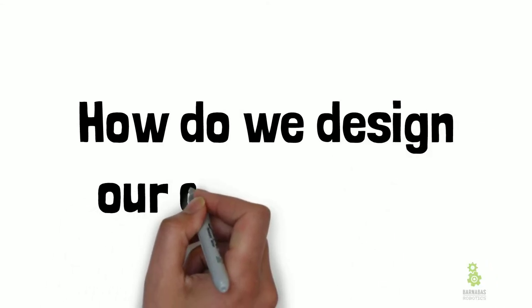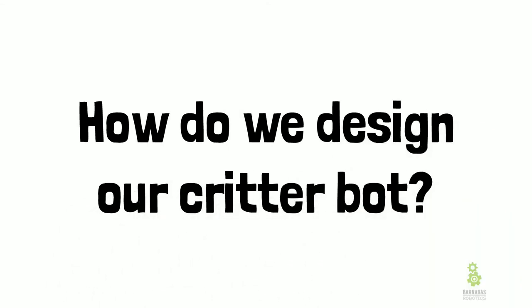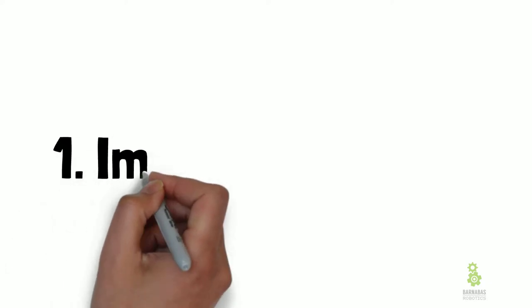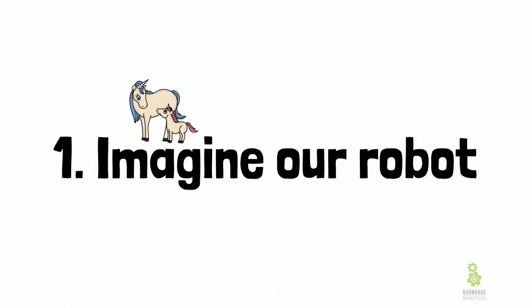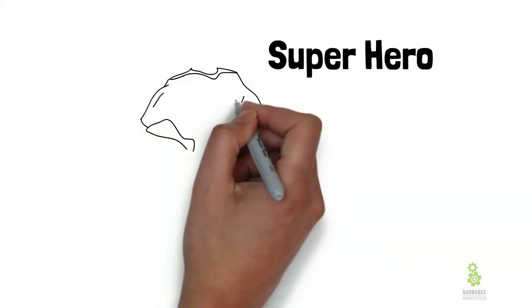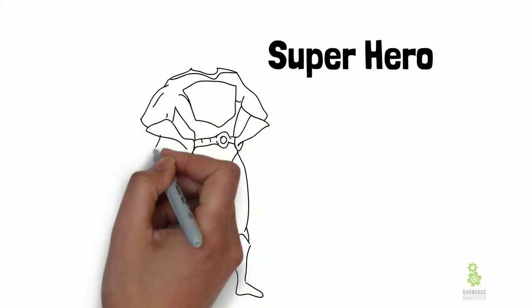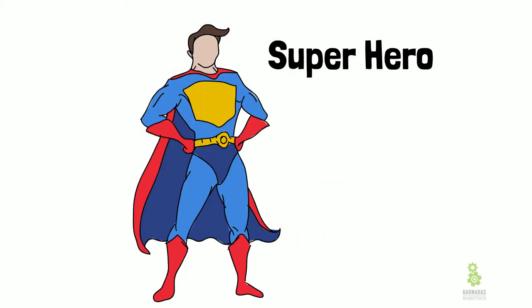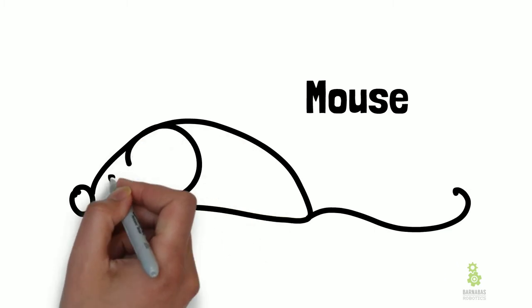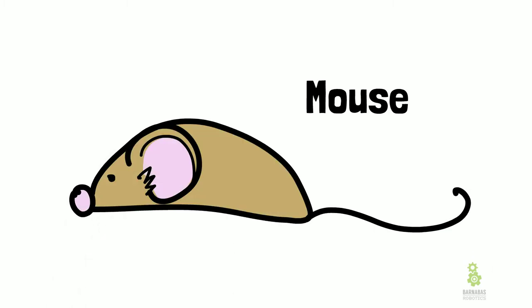So now that we know that, how do we design our critter bot? Well, let's start off — we've got to imagine our robot, we've got to use our right brain. Let's think about what our robot would be. I'll give a couple of examples. So let's say I'm thinking about a superhero. In my brain right now, I'm thinking of a superhero — it's got a cape, and I'm thinking of some colors: blue and red. Looks pretty good. Or what if I wanted to think of a mouse? So in my brain, I'm drawing a mouse — got an ear, some fur, and I'm going with brown, a brown mouse.